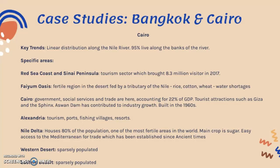Alexandria has a higher population — though not as high as Cairo — due to its tourism, ports, fishing villages, and resorts. The Nile delta at the top of Egypt houses 80% of the population; it is one of the most fertile areas in the world, producing crops like cotton and sugar, with easy access to the Mediterranean for trade established since ancient times. The western and eastern deserts on both sides of the Nile are very sparsely populated due to lack of water supply and difficulty cultivating crops.